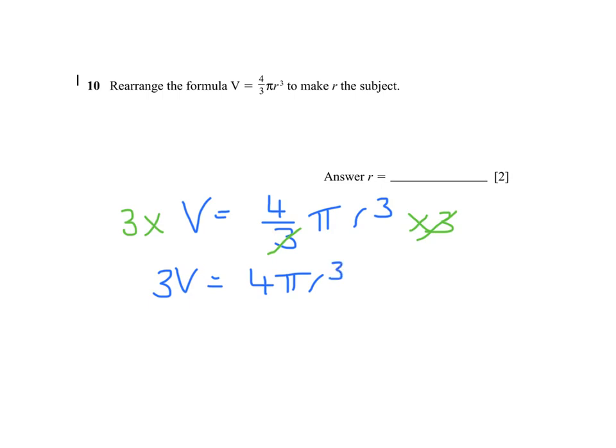I'm now trying to get the r on its own, so I'm going to divide both sides by 4 pi. Again on the right here, the 4 pi's cancel, and I'm left with 3V over 4 pi equals r cubed.